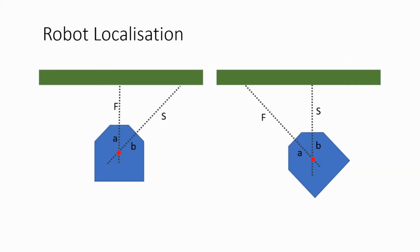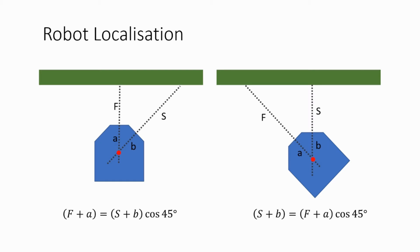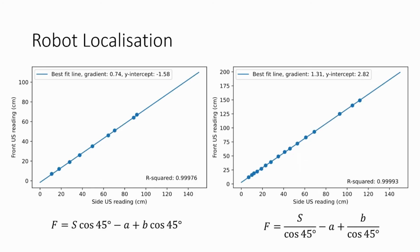Next, the sensor values must be calibrated such that they have the same reference point. Let f be the front ultrasound value, s be the side ultrasound value, a be the distance from the front ultrasound sensor to the reference point, and b the distance from the side ultrasound sensor to the reference point. We record the front and side ultrasound readings in two cases by moving the robot manually using the control panel in the simulator. The variables are related by equations for each case. Plotting f against s for each case, we have two equations for a and b in terms of the y-intercepts of the best fit lines. This allows us to obtain the values of a and b, calibrating our ultrasound sensors to have the same reference point.